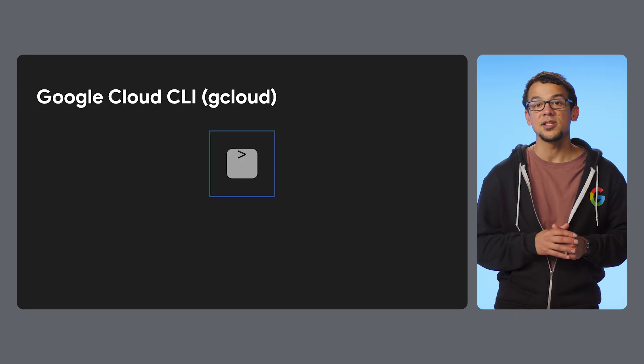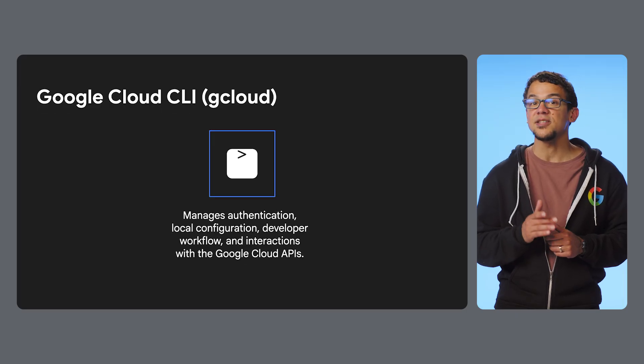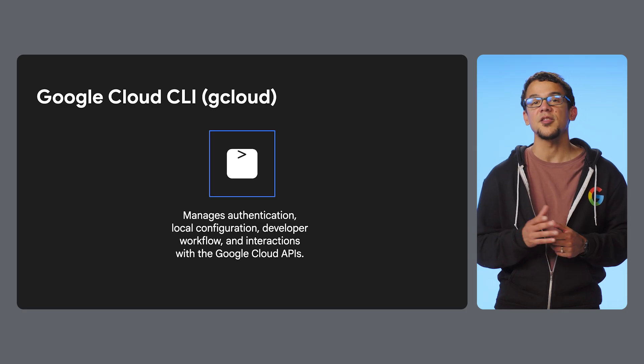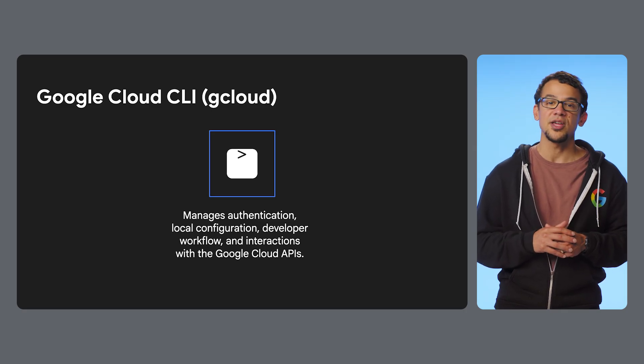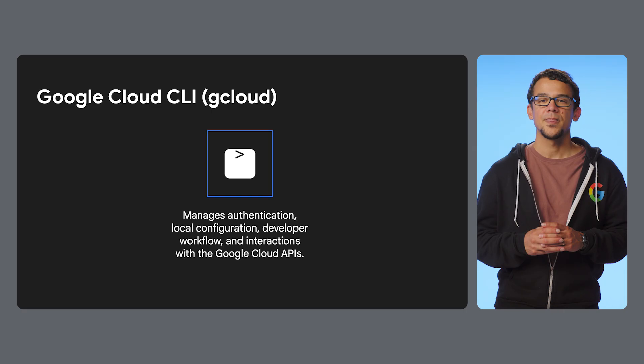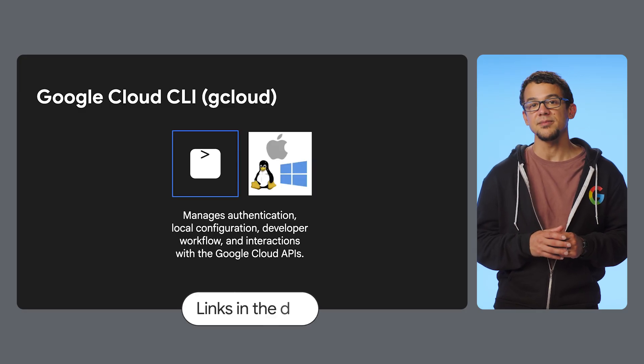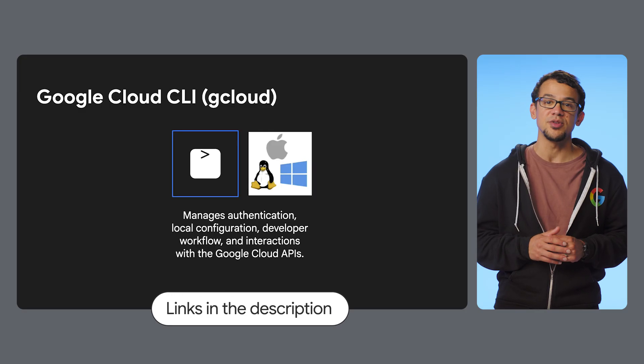If you're developing with Google Cloud on your local machine, you'll need to install the Google Cloud CLI, or gcloud, before you can access Google Cloud services. The Google Cloud CLI is part of the Google Cloud SDK. Not only does it let you manage Google Cloud resources from your terminal, it also handles authentication for your locally running application code. The instructions for installing the Google Cloud CLI vary by operating system, so I've linked instructions in the description.